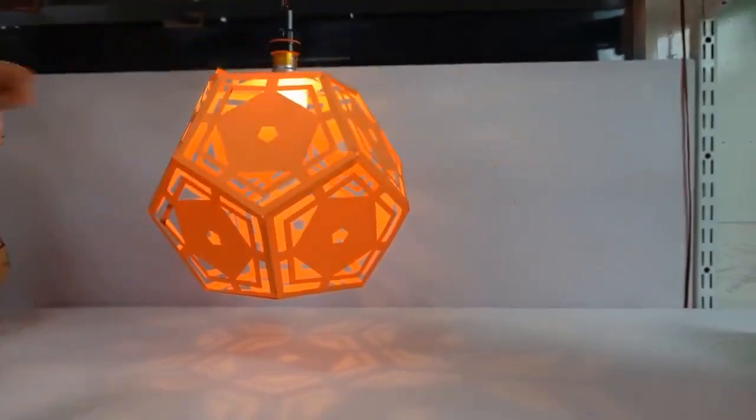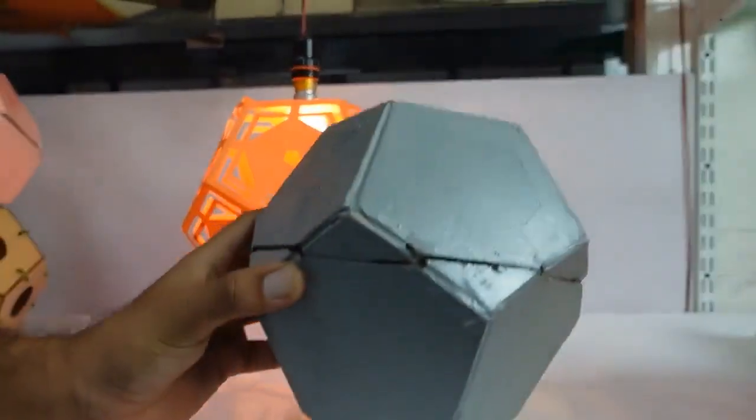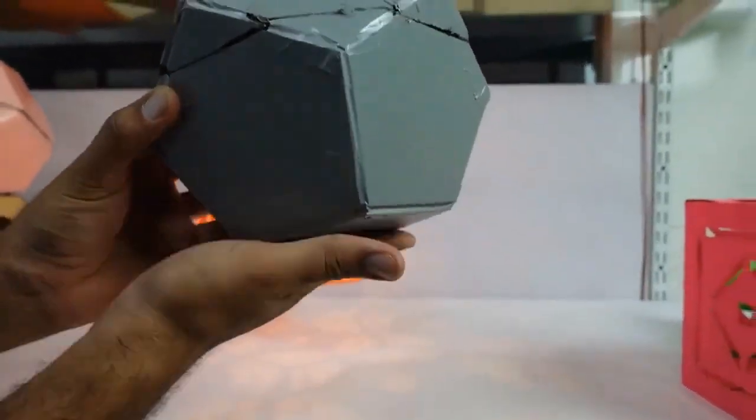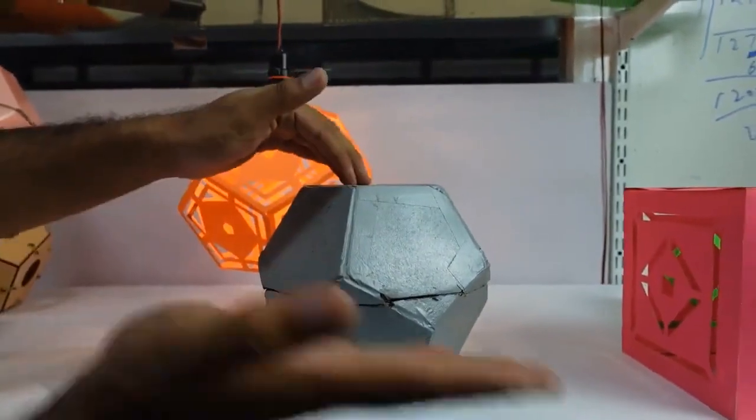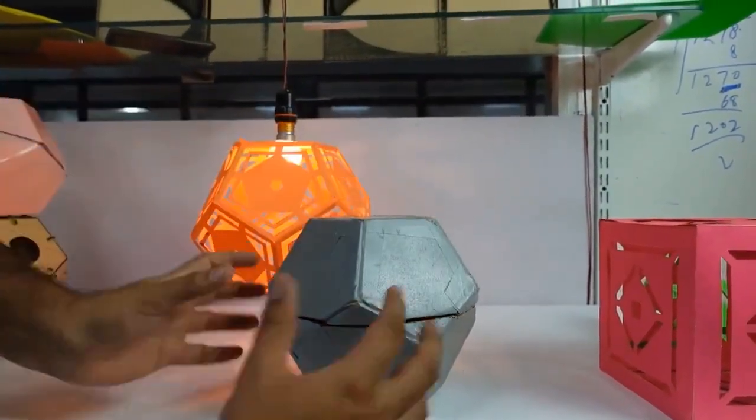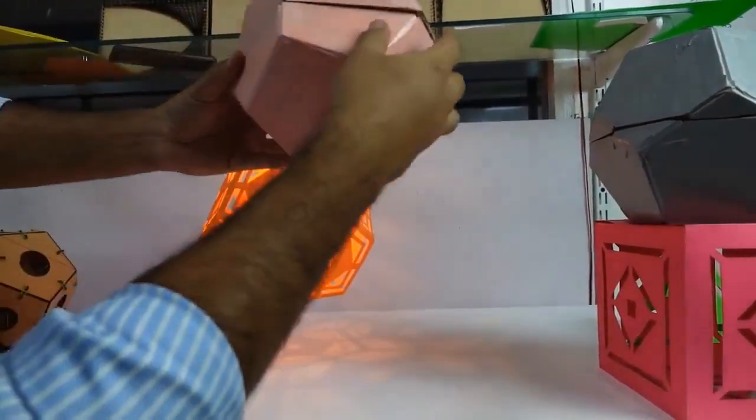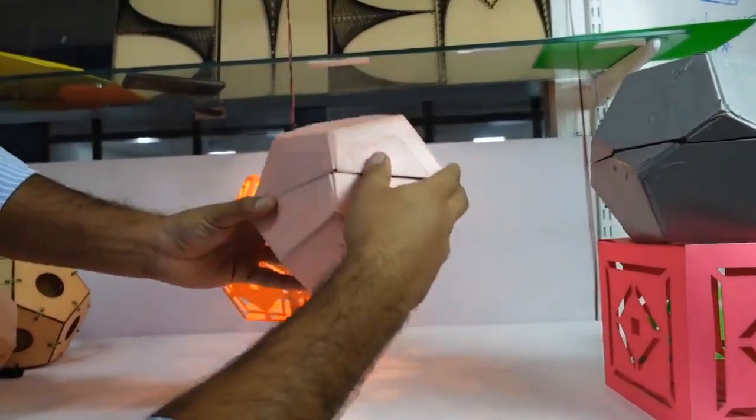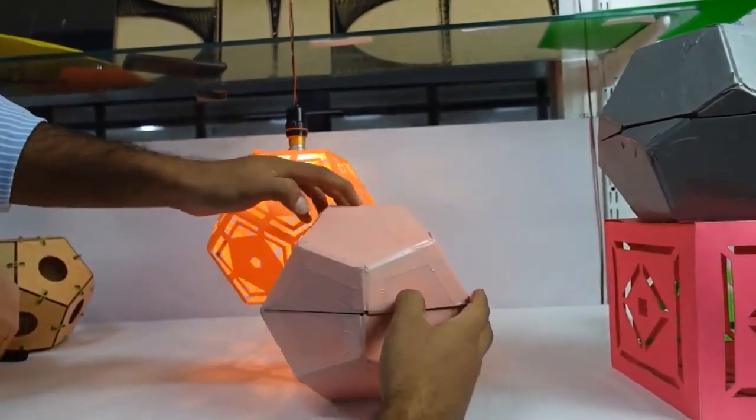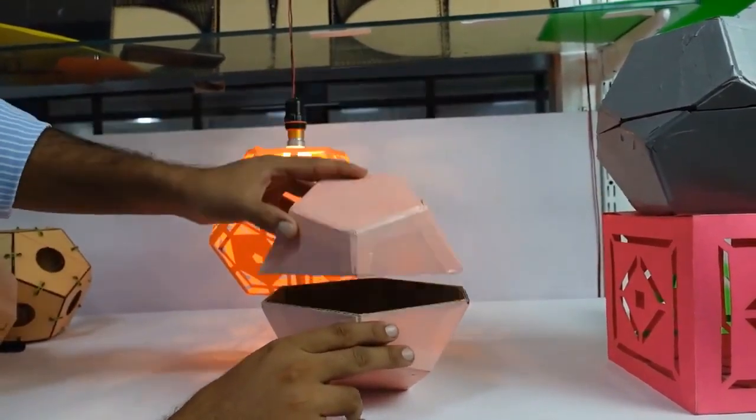We can cut this dodecahedron in different ways to make different caps. Now, if I keep this dodecahedron with its face on the ground and make a cut, this type of cap will be made. If I keep the dodecahedron with its edge on the ground and make a cut, then a different type of cap will be formed.